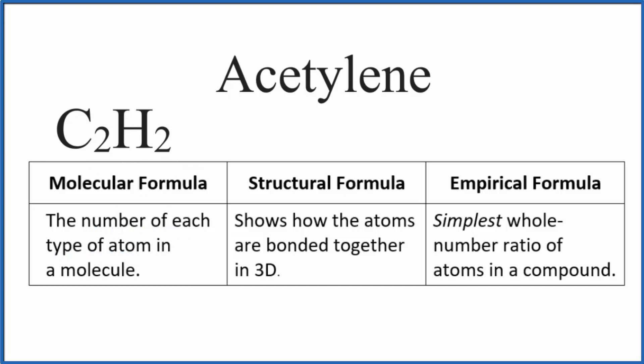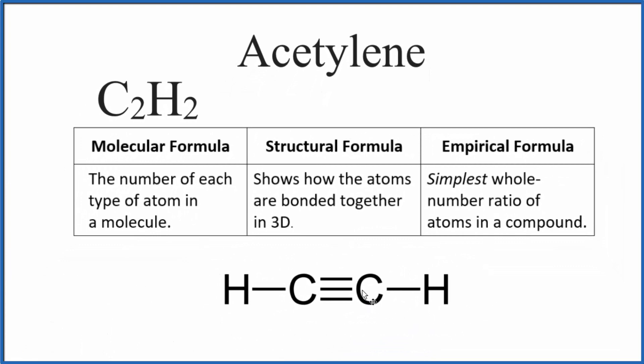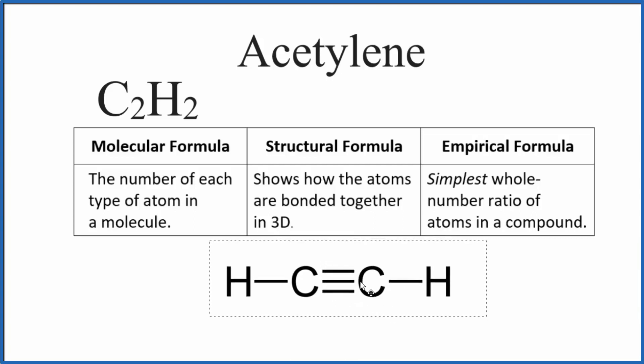It doesn't really tell us the structure. For that, we'll need the structural formula for acetylene. That looks like this here. Again, we have two carbons and two hydrogens, but now we can see there's a triple bond that bonds these carbon atoms together. So the structural formula is useful in that way.